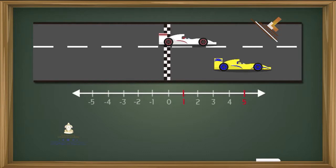La posición final del auto amarillo es de positivo 5, y la posición final del auto blanco es de positivo 1. Por lo tanto, la diferencia es de 5 menos 1, lo que es igual a 4.